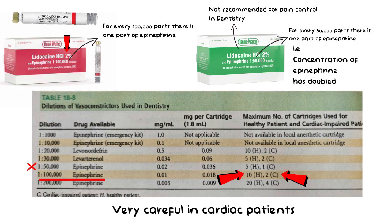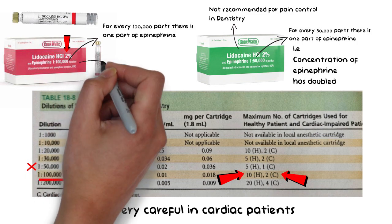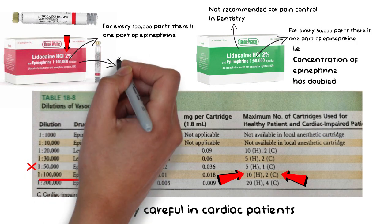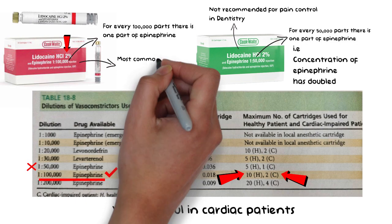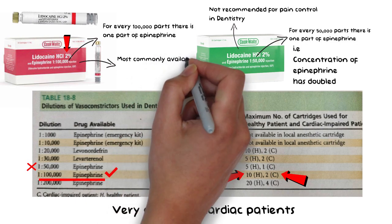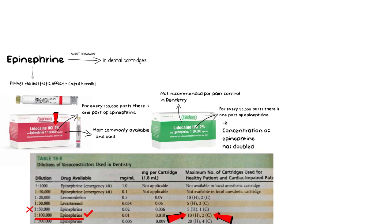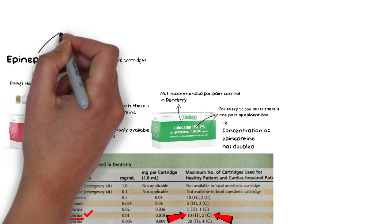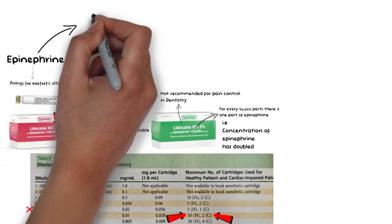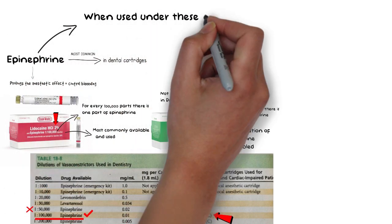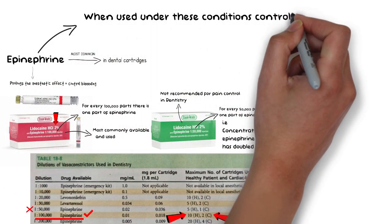Typically, a concentration of 1 part per 100,000 parts of epinephrine along with lidocaine is recommended, and hence it is the most commonly available cartridge on the market. When used under these circumstances, epinephrine or even local anesthetic overdose is extremely rare.